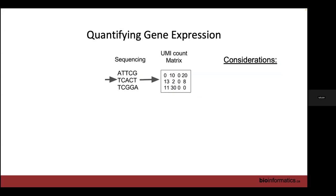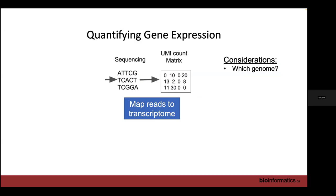Now to quantify gene expression — we've got our sequencing reads back and it's time to start quantifying them. First, we map reads to the transcriptome. You need to consider what genome to use: if you have a knock-in mouse with a novel human gene, you'll need to add that gene to your reference genome. Also consider annotation quality — for mouse or human this isn't a big deal, but for non-model species it can be a big problem, particularly because we're only sequencing one end of the transcript. If transcripts have long UTRs not yet annotated, you could lose a lot of reads.